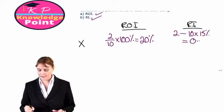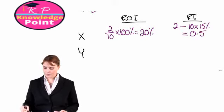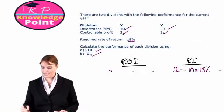Looking at department Y then, return on investment is equal to the profit divided by their investment. 3 divided by 30 multiplied by 100% gives us 10%.